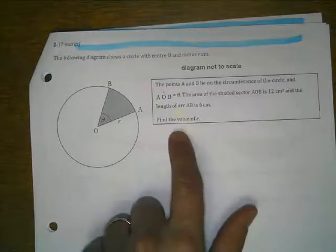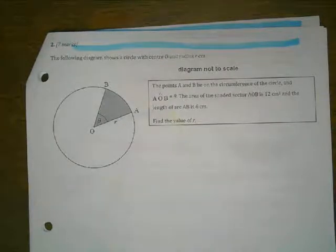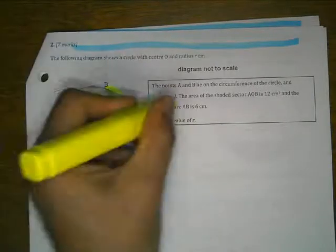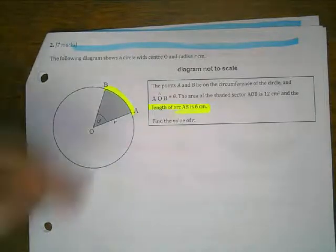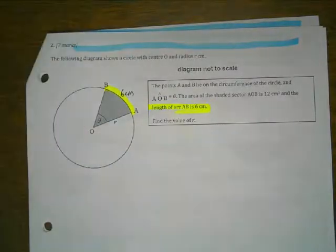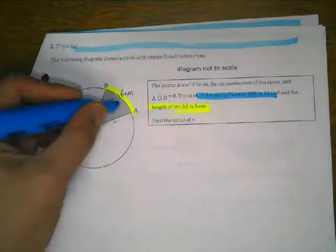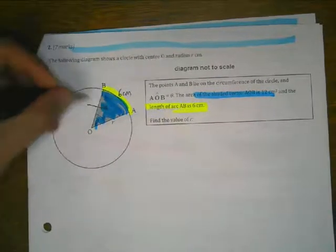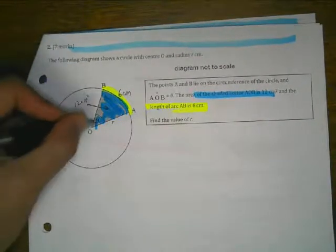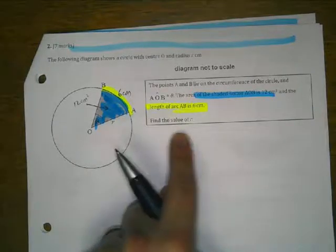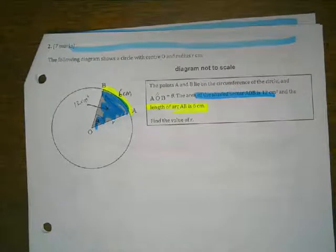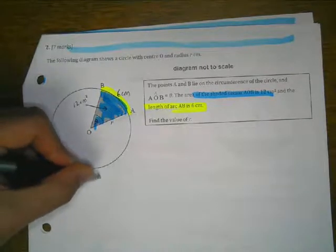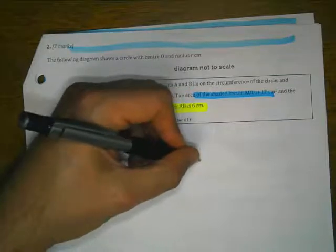We want to find the radius given this information. We know that the arc length is six centimeters and the shaded area is 12 centimeters squared. We're trying to find the value of R. We don't know the angle and it's not necessary to solve this problem, so let's start off with our formulas — the circumference and the area of a sector.